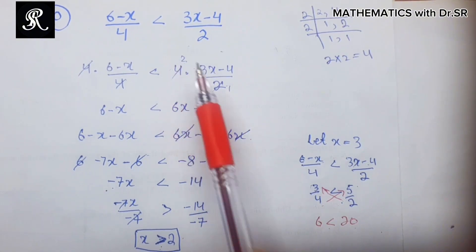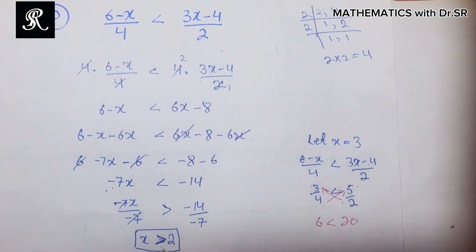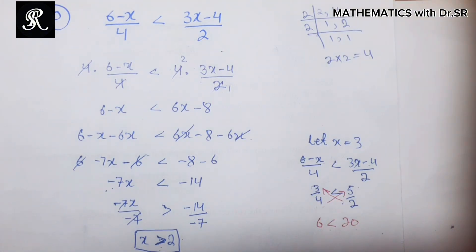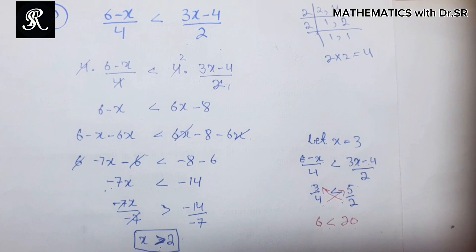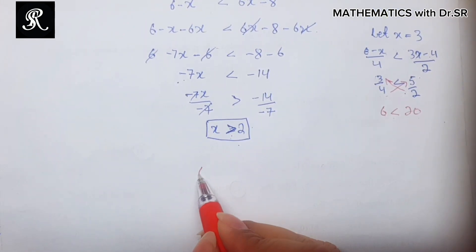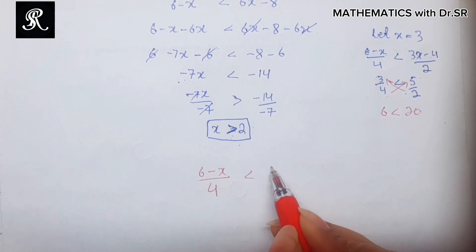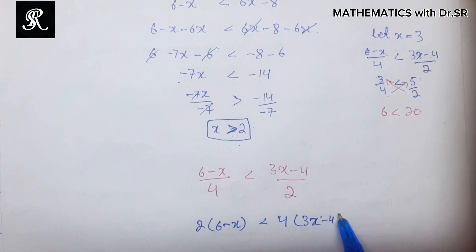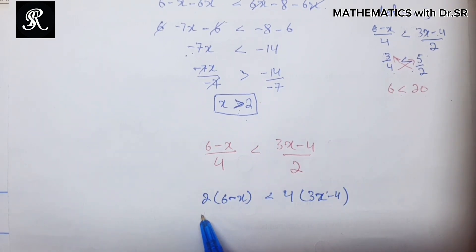If you check any value less than 2, the inequality will be false. So the solution is confirmed. Similarly, you should solve problems 11 and 12. Now, if you want to solve this problem using simple cross multiplication, let us demonstrate that approach.